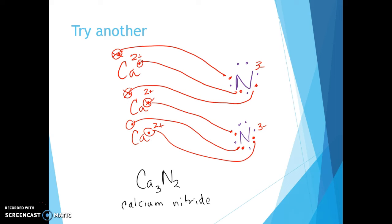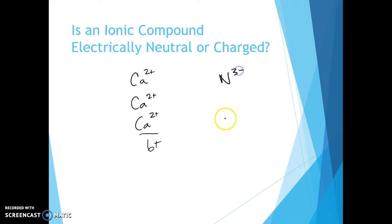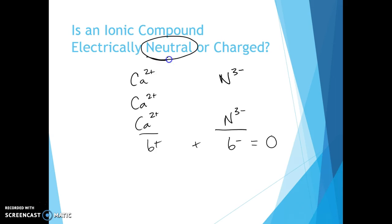Is an ionic compound electrically neutral or charged? When we work through the charges — three Ca2+ ions give a total of 6+, and two N3- ions give 6- — they add up to zero. Looking back at Na2O: two Na's at +1 equals +2, one O at -2, total charge zero. Ionic compounds are always electrically neutral. They must be neutral and cannot be charged — that's a key rule in everything we do.